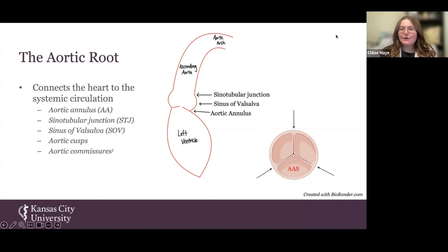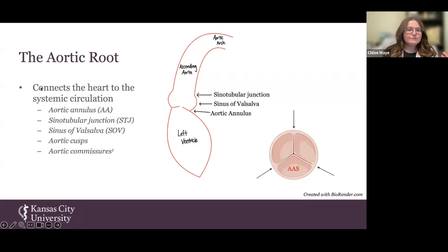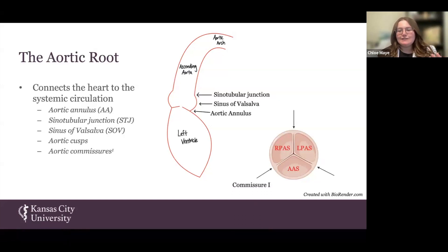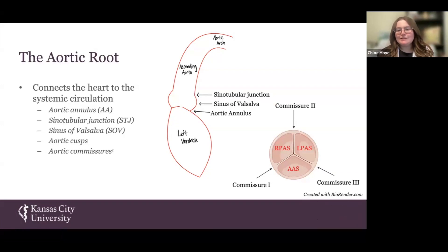There are three aortic cusps that make up your aortic valve: the anterior aortic sinus, the left posterior aortic sinus, and your right posterior aortic sinus. Between these structures we have our aortic commissures. Commissure one separates the anterior aortic sinus from the right posterior aortic sinus. Commissure two separates the right posterior and left posterior aortic sinuses, and commissure three separates the left posterior and anterior aortic sinuses.